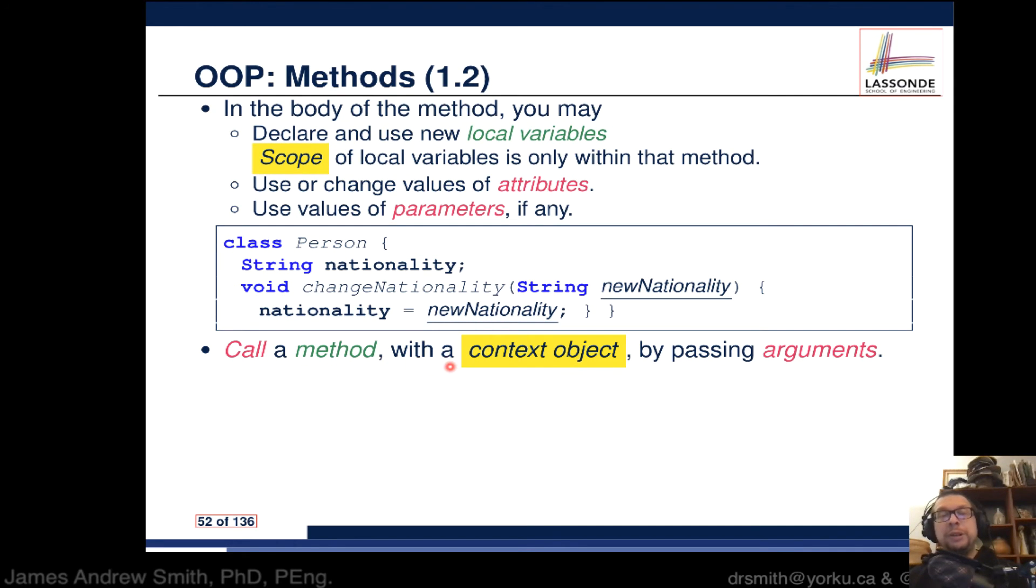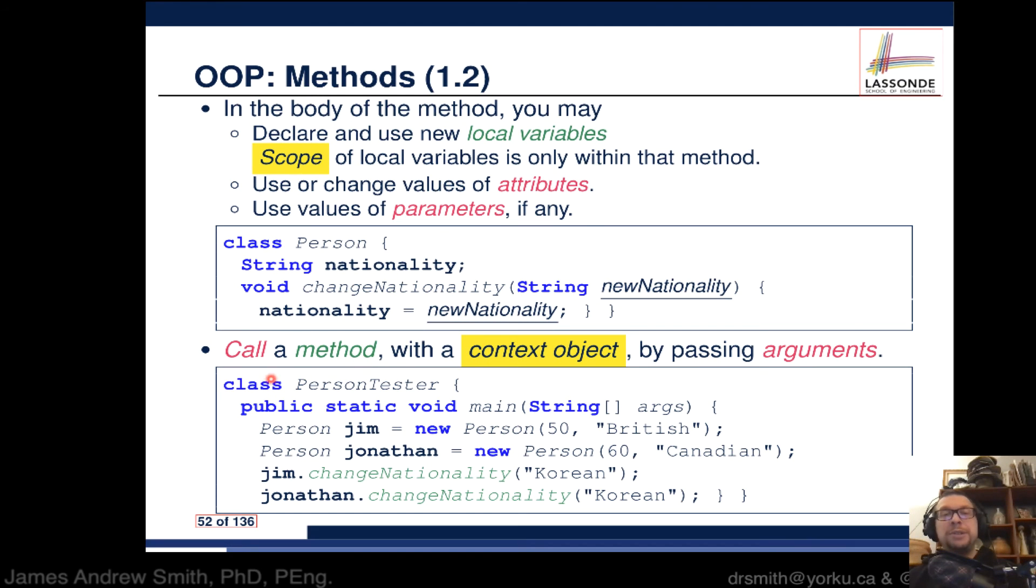We call a method with respect to a context object using dot notation, passing arguments in. Here's an example: we have a main class with a main method. Inside the main method we create two objects: jim and jonathan, both of type Person. The constructor for jim shows Person with age 50 and nationality British. Jonathan is set up with age 60 and Canadian nationality.